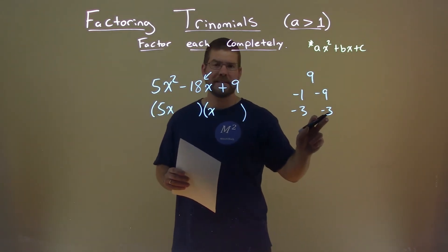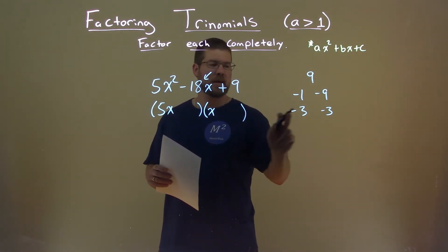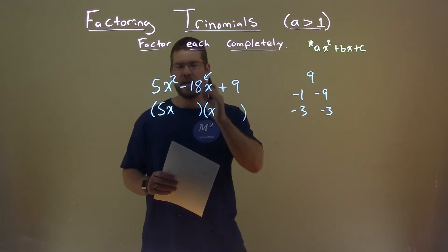Well, 5 times negative 3 is negative 15. I see that. That's close to negative 18. Subtract 1 times negative 3, and bingo, we got it. Negative 18.